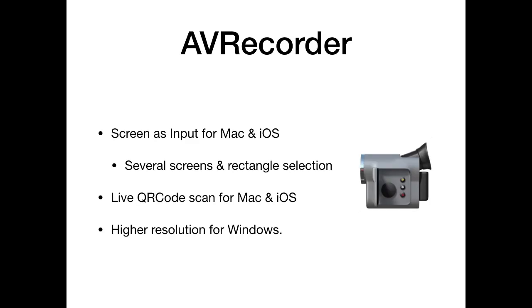Then we came to version 8.4. For our video recording functions, which work on Mac and Windows, we can now pick the screen as input on Mac and iOS, so you can do screen recordings and pick which rectangle or screen to use. On Mac and iOS we can also do QR code scanning live from the camera — hold a QR code in front of the camera and a script is triggered when a code is found. For Windows we got an upgrade to get higher video resolution, useful if you have an HD camera and want to use the highest available resolution.